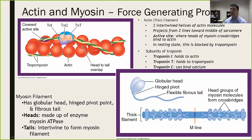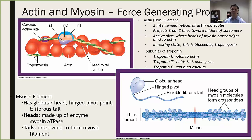Actin is a series of globular proteins depicted by circles. They create a long line and then intertwine together to create an actin molecule. My personal view of these is to think of two pearl necklaces wrapped around each other in a strand — that's really what this looks like, and this picture from your textbook does a really good job of demonstrating that.